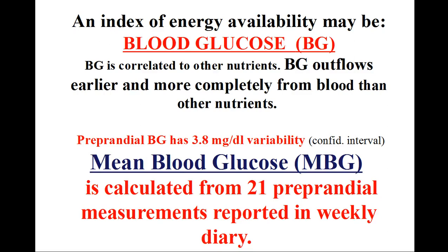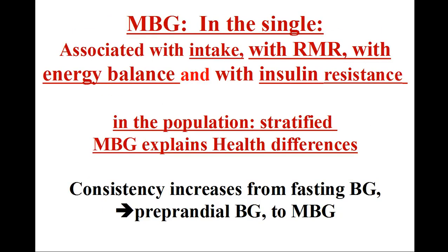MBG is quite consistent — after five months MBG shows a confidence interval of 5.0. Mean blood glucose (MBG) in the individual is associated with energy intake, with resting metabolic rate (RMR), with energy balance, and with insulin resistance. MBG is stratified in the population and explains health differences by its association with insulin resistance, fattening, and diabetes. Reliability increases from fasting BG to preprandial BG to MBG. Fasting BG's level largely depends on the start time of the post-absorptive period and dinner energy intake.